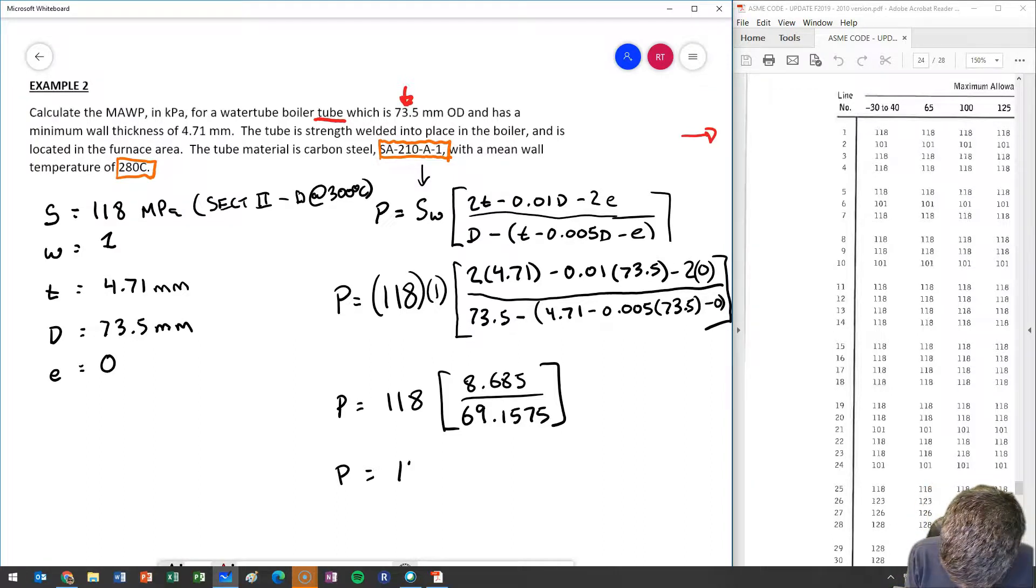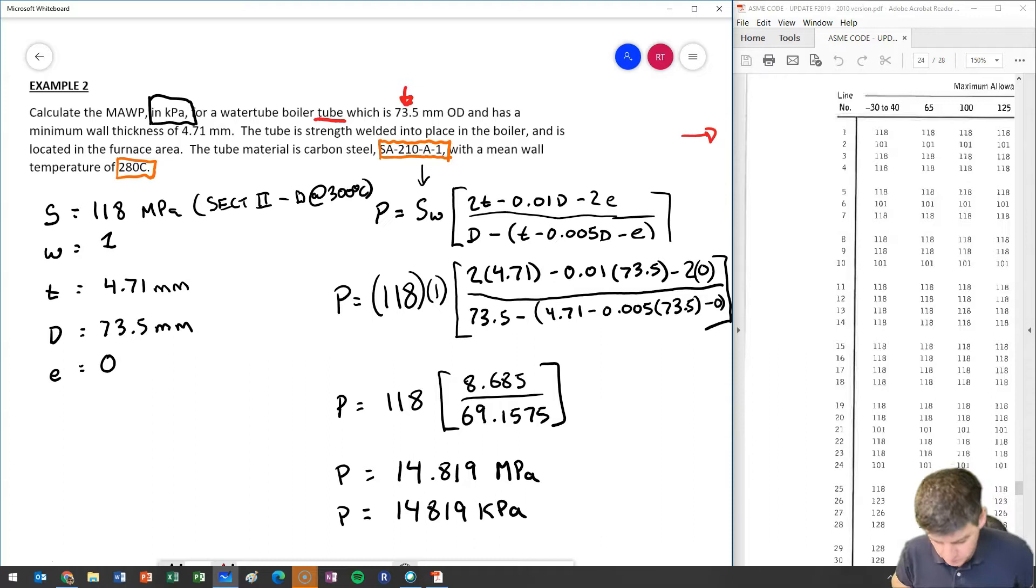And I have a pressure of 14.819 MPa. I'm being asked in kPa, so pressure in this case, 14.819 kPa would be my maximum allowable working pressure.